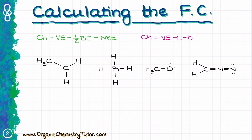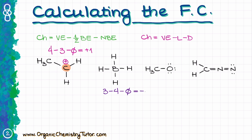Let's look at a couple of examples. For the first carbon atom, valence electrons are four — carbon sits in the fourth group of the periodic table. It has three lines attached and zero electrons on it, so the charge is four minus three minus zero equals plus one. For boron, located in the third group, we have three valence electrons minus four bonds minus zero electrons, giving a charge of negative one.